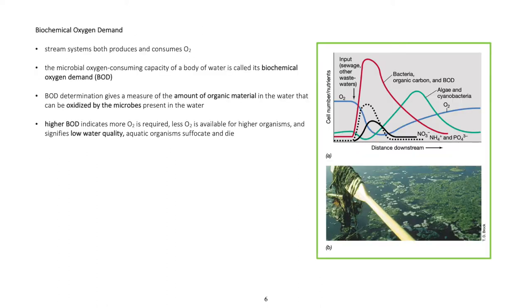Biochemical oxygen demand (BOD): Stream systems both produce and consume oxygen. The microbial oxygen-consuming capacity of a body of water is called its biochemical oxygen demand or BOD. BOD determination gives a measure of the amount of organic material in the water that can be oxidized by the microbes present. Higher BOD indicates more oxygen is required and less oxygen is available for higher organisms, signifying low water quality in which aquatic organisms suffocate and die.